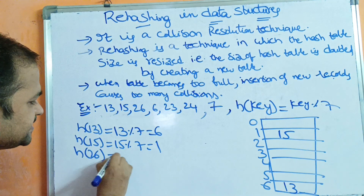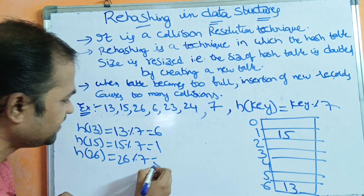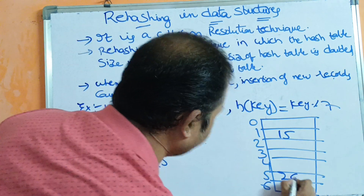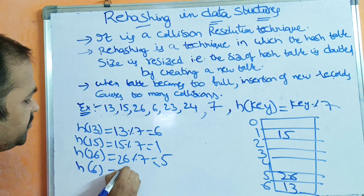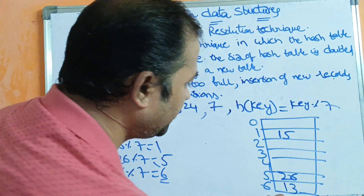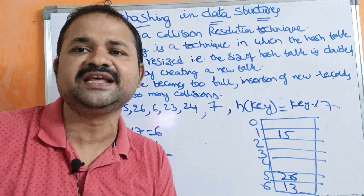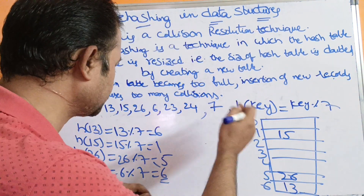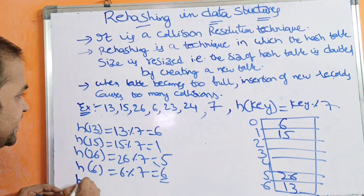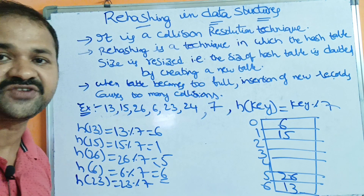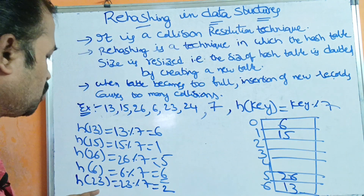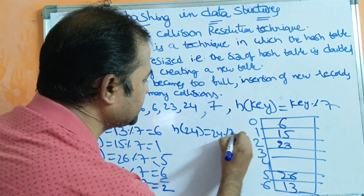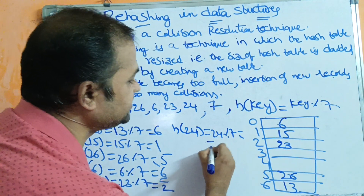Next, H(6) = 6 modulo 7 = 6. But location 6 is already occupied, so we use linear probing — the next location is 0, which is free, so we store 6 there. Next, H(23) = 23 modulo 7: 7 threes are 21, so 23 minus 21 = 2. We store 23 at index 2. Next, H(24) = 24 modulo 7: 7 threes are 21, so 24 minus 21 = 3. We store 24 at index 3.